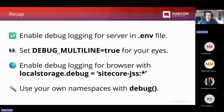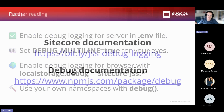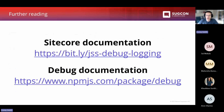To recap tip one: you can enable debug logging for your server in the .env file. Add debug_multiline equals true to make things a lot more readable. If you want to turn on debug logging in the browser, just set the debug property on localStorage in the browser console to whatever filter you want. Just like Sitecore has their own namespaces like sitecore:jss, you can make your own. Check out the debug documentation on the npm.js website and Sitecore's documentation for available filters.